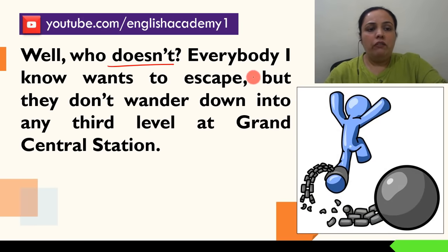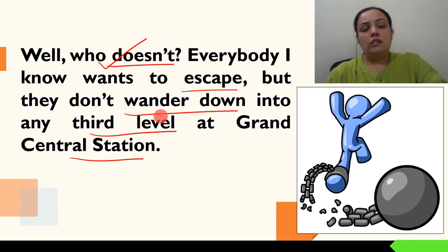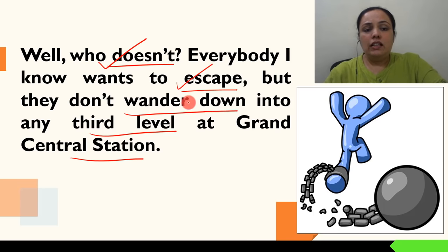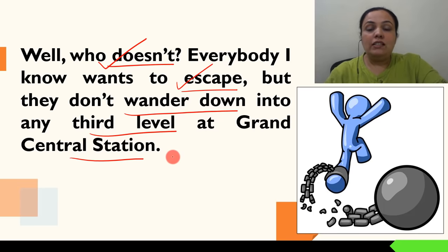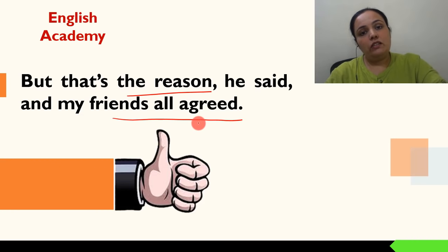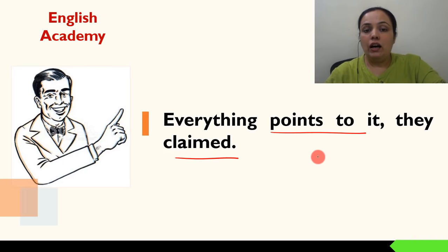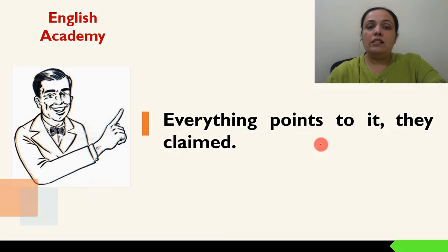Well, everybody I know wants to escape, but they don't wander down into any third level at Grand Central Station. Charlie ne kaha ki kaun nahi escape karna chahta — sab apni life se dukhi hain, sab bahut zyada sad hain, sab escape karna chahte hain. Lekin iska matlab ye nahi hai ki sabhi log aisa imagine kar rahe hain ki woh Grand Central Station ke third level par jakar aaye hain. But that's the reason he said, and my friends all agreed — everything points to it, they claimed — ki tumhaari jitni bhi symptoms hain woh isi taraf ishara kar rahi hain.